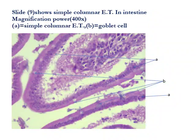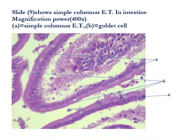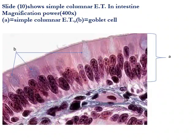At higher magnification, we can observe that the nuclei are at the same level and are elongated, situated near the base of the cell. We can also observe the goblet cells, which appear as swollen cells with a lighter color due to the presence of mucus. These goblet cells are considered a type of gland, which will be discussed further in the glands lecture.